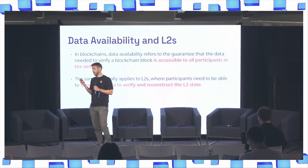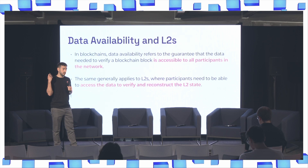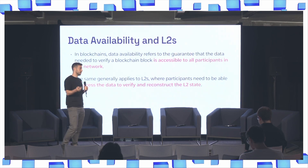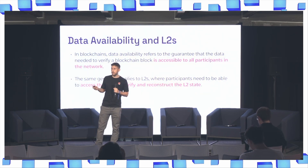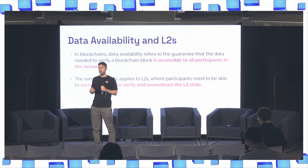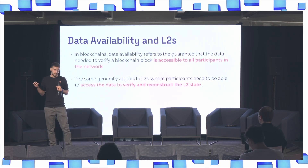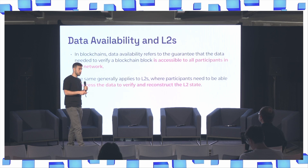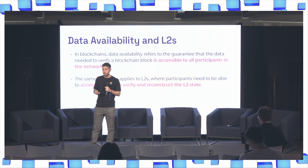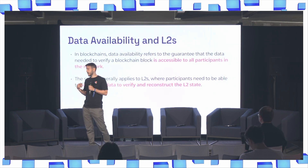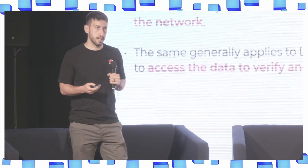A brief primer on data availability: it's basically making block data accessible to all participants in the network to verify a blockchain block. This generally applies also to layer 2s, where participants in the network need to be able to access the data to verify the L2 state.